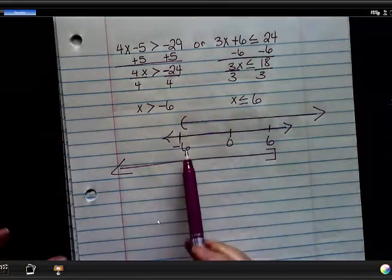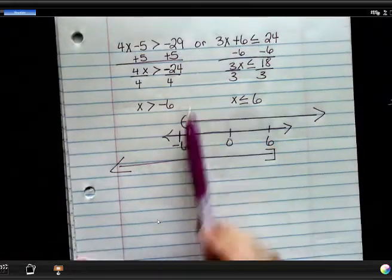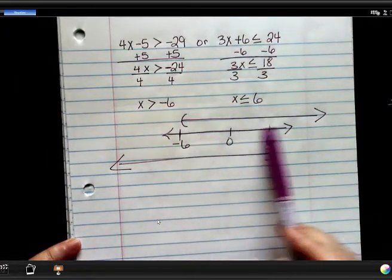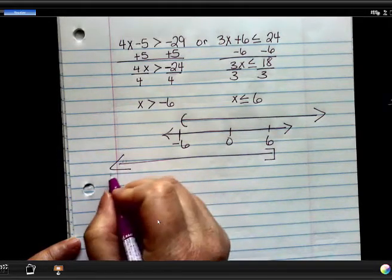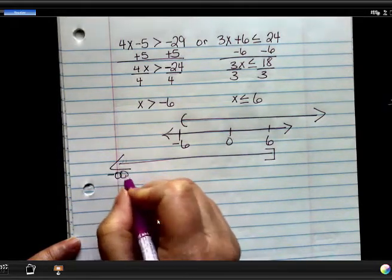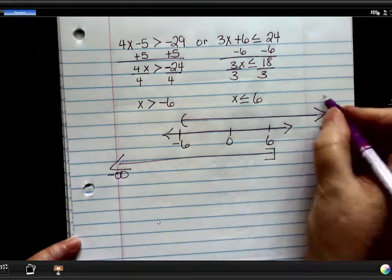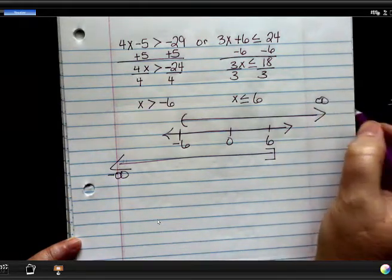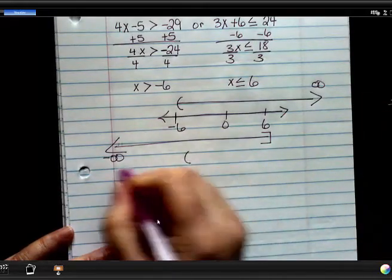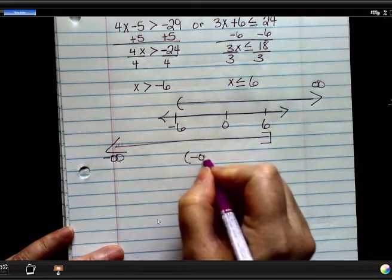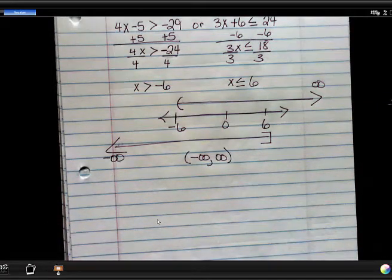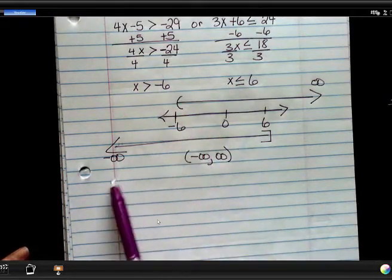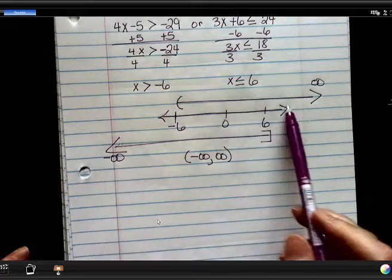So now when I talk about the union, that means all of this and all of this. So where is this headed in this direction? Negative infinity. And then where is this side going to? Positive infinity. So I have from negative infinity to positive infinity for my solution. That's how they all do. On this problem, it's going to go from negative to positive infinity.